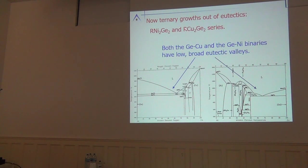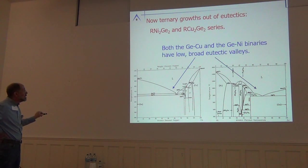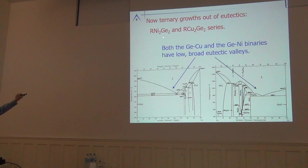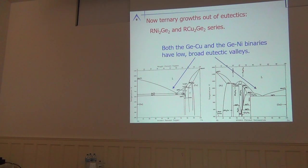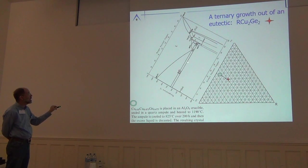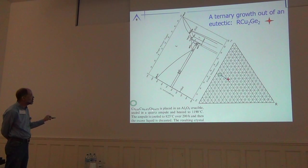You can also grow many 1-2-2 materials — rare earth nickel 2 germanium 2, rare earth copper 2 germanium 2 — out of a eutectic. The germanium-copper eutectic and the nickel-germanium eutectic both lie near the 50-50 composition, which is convenient because rare earth nickel 2 germanium 2 has that same 50-50 nickel-to-germanium ratio. So all we have to do is add a little rare earth to the eutectic melt — specifically, add 5% cerium to a 50-50 copper-germanium mixture.